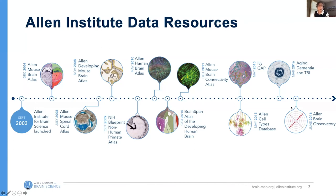Over the last decade plus, we've generated a number of different datasets that you can see on this timeline. The one I'm going to tell you about is the Allen Brain Observatory on the far right. This is our first dataset that is an in vivo physiology dataset. A lot of our previous datasets were focused on gene expression in different structures of the brain of the mouse or the human, and then connectivity between different parts of the brain. But this was our first foray into collecting data in the awake, alive animal.